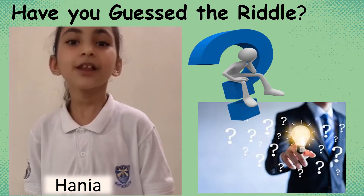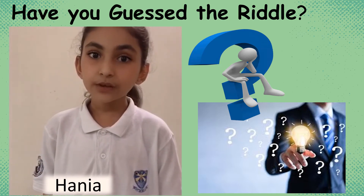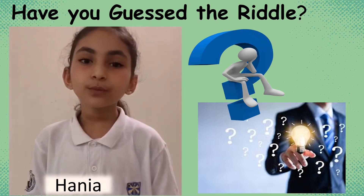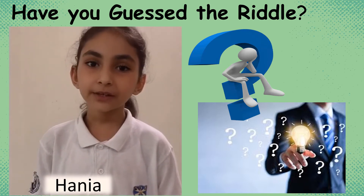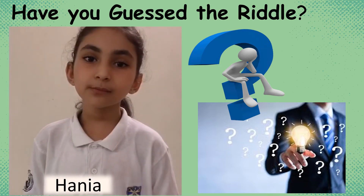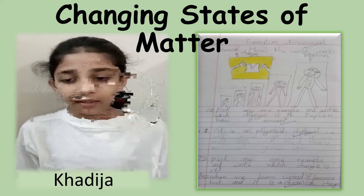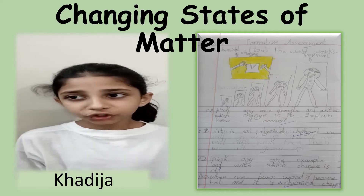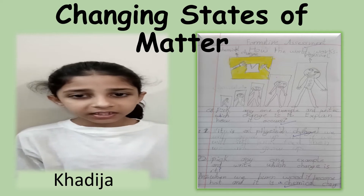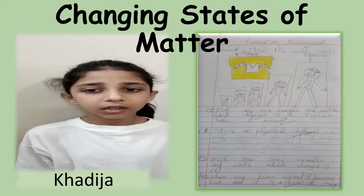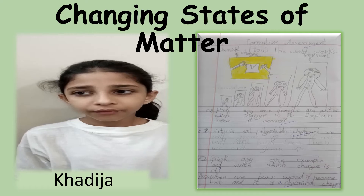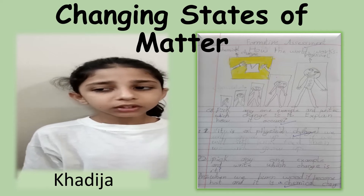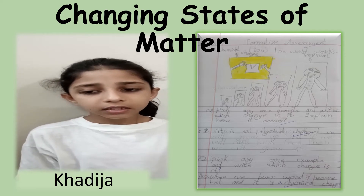Did you get the answer to the riddle? Yes, you are right. The tiny speck of dust in outer space and you both are made up of molecules. In this unit, we explored properties of matter and found that matter sometimes changes its state. Matter exists in nature in its basic form, but due to some factors it changes state — like ice turns into water because of heat. There are various ways we can bring change in the state of matter. Some changes are permanent and some are temporary.